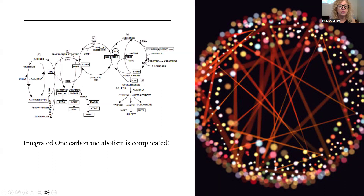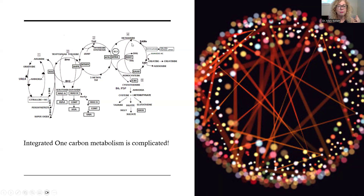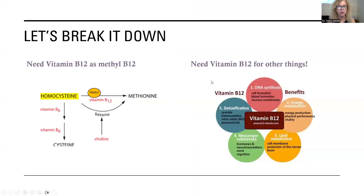I also need to run my urea cycle to get rid of excess toxins, and I need nitric oxide synthase so I have nice big blood vessels with plenty of blood getting to my brain, my heart, and my periphery — so my hands are not cold. One-carbon metabolism is quite complicated and super interesting, but way beyond the scope of just this talk.